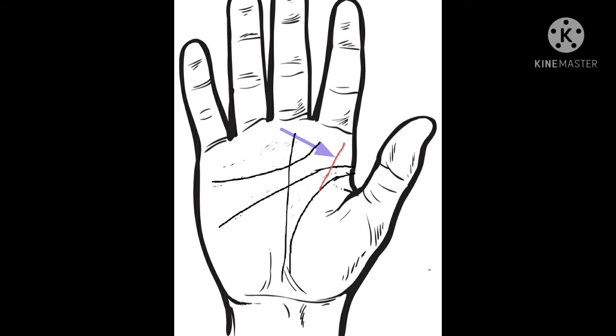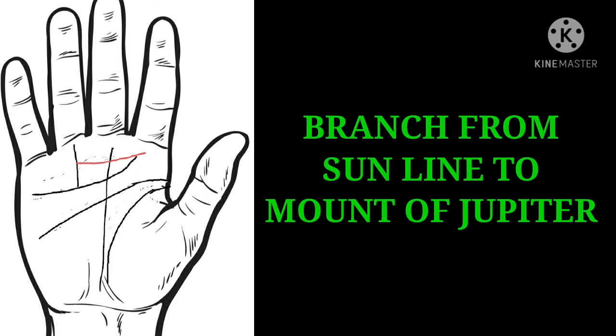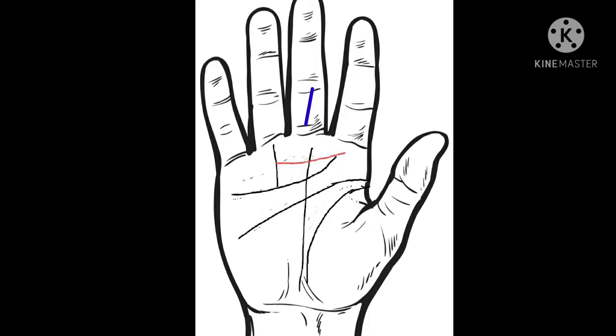Branch from sun line to mount of Jupiter. Although a very rare combination, if a branch from the sun line goes all the way to Jupiter mount, it is a strong indication of a powerful administrative post in one's life. It is a brilliant marking on the hands of extremely successful people in their area of expertise.